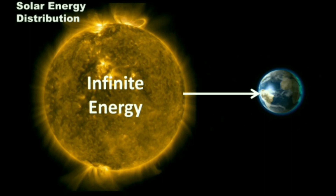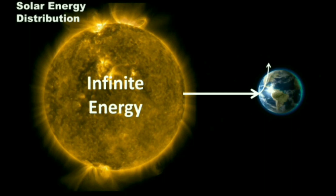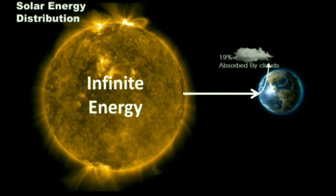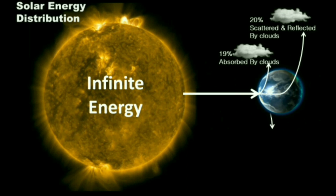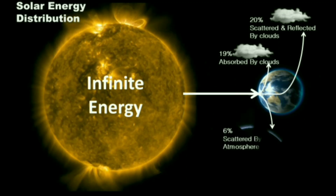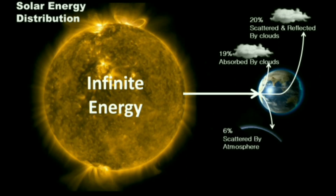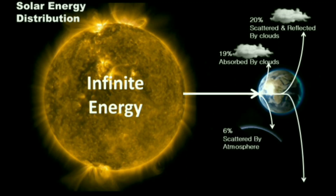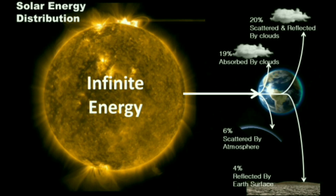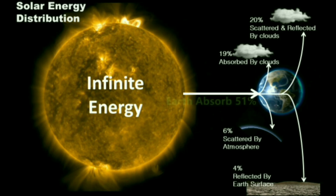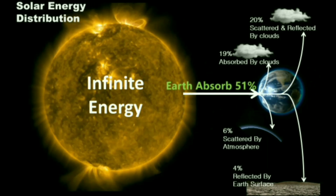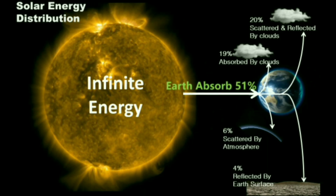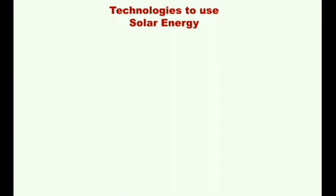Of the total solar energy reaching Earth, 19% is absorbed by clouds, 20% is reflected by clouds, 6% is scattered by the atmosphere, and 4% is reflected by Earth's surface. Ultimately, Earth absorbs only 51% of the total solar energy from the Sun.